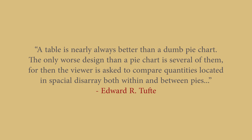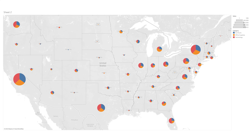Does Edward Tufte not like pie charts? Not at all — he actually calls them dumb. The full quote is: 'A table is nearly always better than a dumb pie chart. The only worse design than a pie chart is several of them. For then, the viewer is asked to compare quantities located in a spatial disarray, both within and between pies.' He's actually referring to this kind of map visualization, and I kind of agree. But then I ask myself: isn't this really showing data at different levels — one of the eight points he sets out at the start of the book? For me, when you're looking at something like this in a dashboard, your primary focus should be drawn to the size of the pie charts on the map to indicate a primary metric, then the pie charts allow for a closer inspection by a secondary dimension.